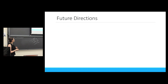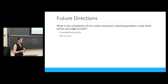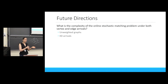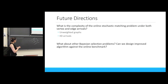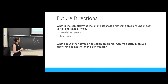To finish, here are some future directions. First, it is very interesting to understand the computational complexity of online stochastic matching for both edge arrival and vertex arrival, and for weighted and unweighted settings. Second, it would be valuable to study other Bayesian optimization problems with respect to the online benchmark and see if we can get better approximation ratios when considering this alternative benchmark. Thank you.